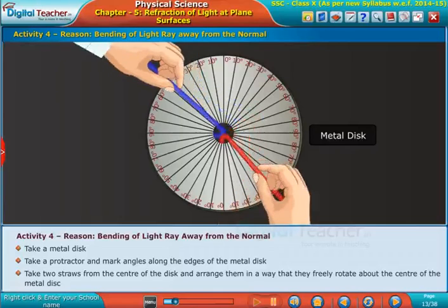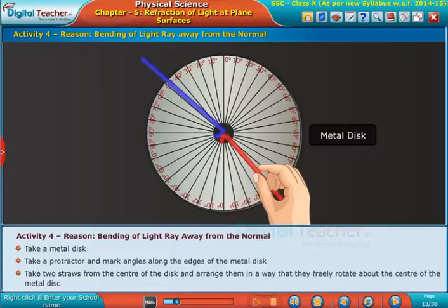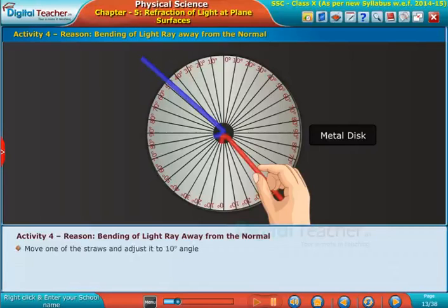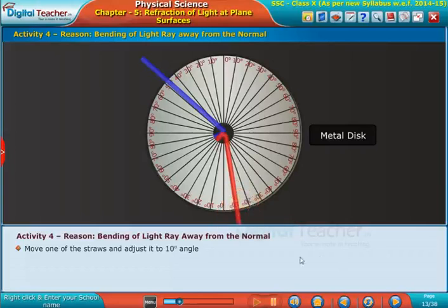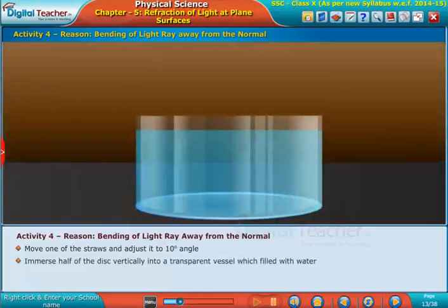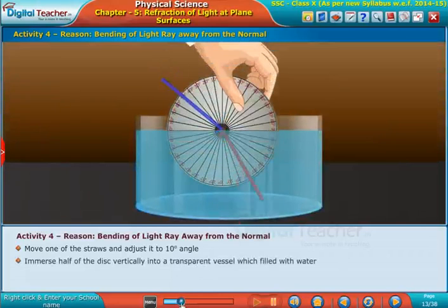Arrange them in a way that they freely rotate about the center of the metal disc. Move one of the straws and adjust it to 10 degrees angle. Immerse half of the disc vertically into a transparent vessel.